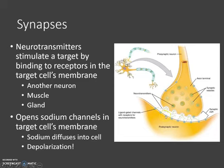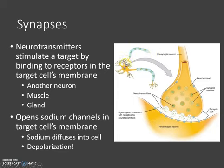Those neurotransmitters bind to receptors and open channels in the target to allow ions to go into the target, which then starts depolarization in the target. So: depolarization here, neurotransmitter release, binds to the receptors,